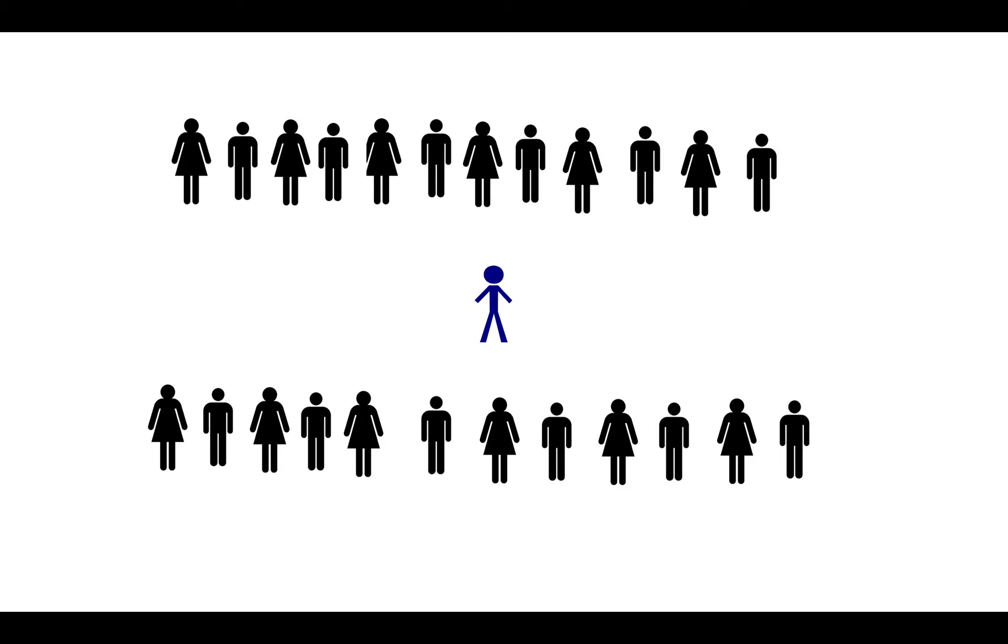Here we have a student. Let's name him John. John is in a class of 25 people. He's an average student, which means that he is number 13 on all of his assignments.